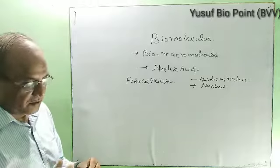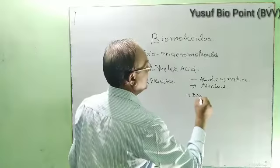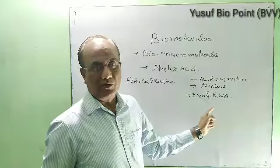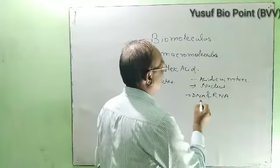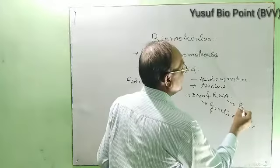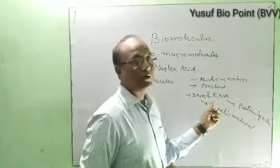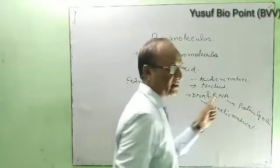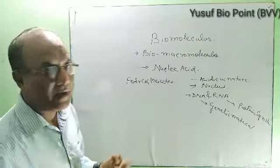Nucleic acid includes DNA — deoxyribonucleic acid — and RNA — ribonucleic acid. DNA is especially used as genetic material, and RNA takes part in protein synthesis. Nucleic acid is also used as genetic material in some viruses, but mainly the genetic material is DNA.